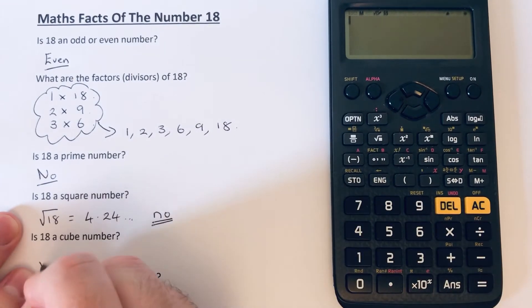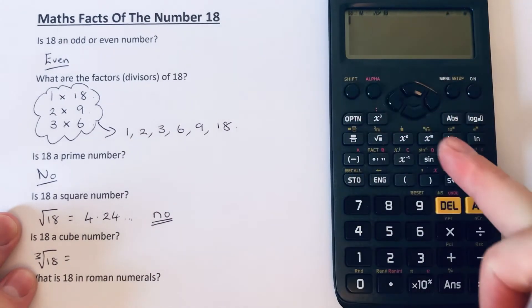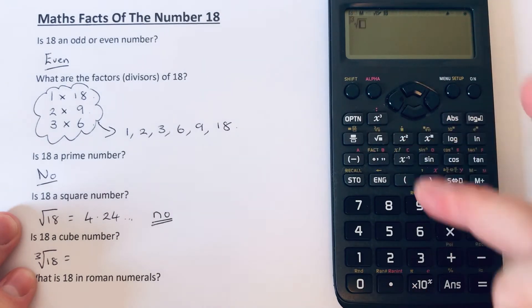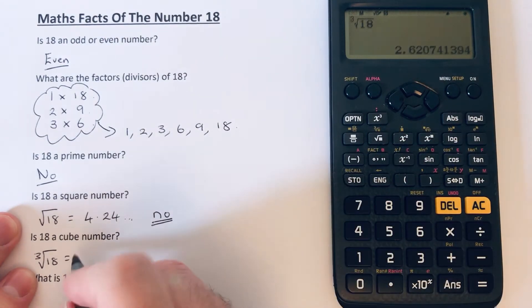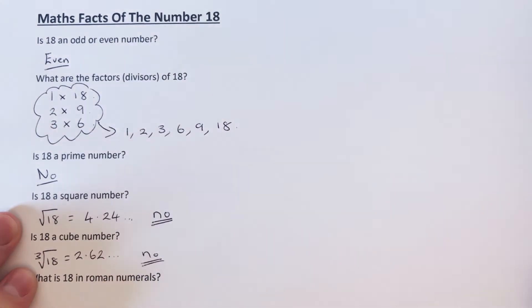Is it a cube number? Well, we should be able to cube root 18, and if it gives a whole number then it would be a cube number. So we get 2.62, so again the answer to this is no.